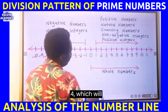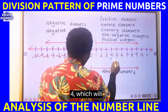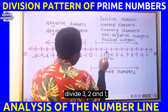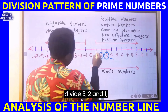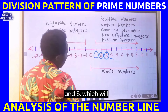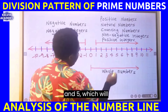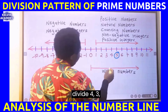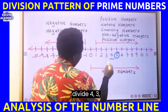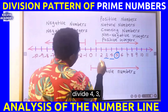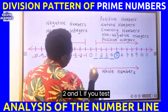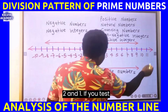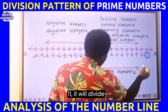Let's quickly test for 4, which will divide 3, 2, and 1. And 5, which will divide 4, 3, 2, and 1.